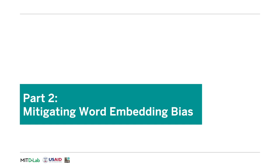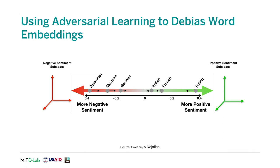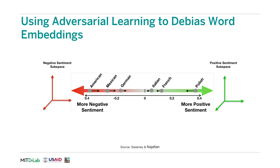This score is the divergence between the set of probabilities for negative sentiment for national origin identity terms and the uniform distribution. The uniform distribution describes a perfectly fair case where no demographic receives a disproportionate amount of sentiment in the word embedding model. Now that we have a grasp on word embedding bias, we can start to figure out how to mitigate it. Sweeney and Najafian use adversarial learning to de-bias word embeddings. Different identity terms can be more or less correlated with positive or negative sentiment — for example, words like 'American,' 'Mexican,' and 'German' may appear more frequently associated with negative or positive sentiments in the dataset. Ideally, we want each of those identity terms to sit at a neutral point between negative and positive sentiment subspaces without distorting their meaning within the vector space, so the word embedding model can still be useful.